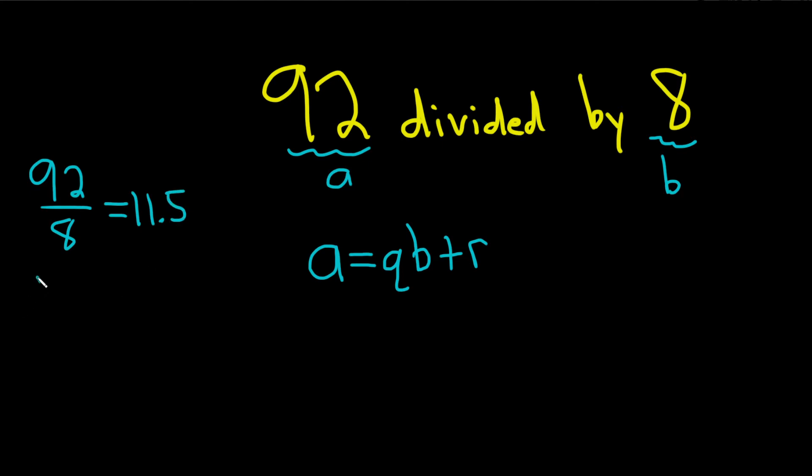Now here's the trick. You always want to round down no matter what. So round down. So if you round this number down you're going to get 11. That's your quotient. So to find the quotient all you do is divide, put it in your calculator, and then round down. Always.